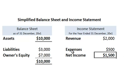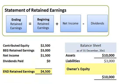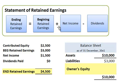Now let's see how they link together in the third financial statement: the statement of retained earnings. The one not covered here is the cash flow statement. For the statement of retained earnings, the fundamental equation is: ending retained earnings equals beginning retained earnings plus net income — that bottom line from the income statement — minus any dividends paid out to shareholders.